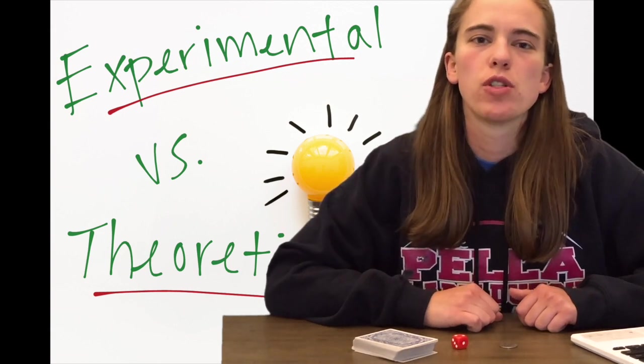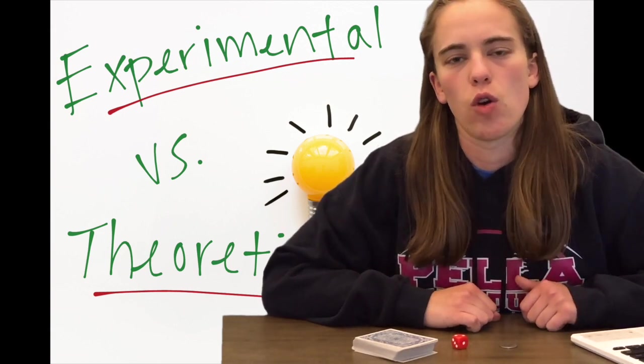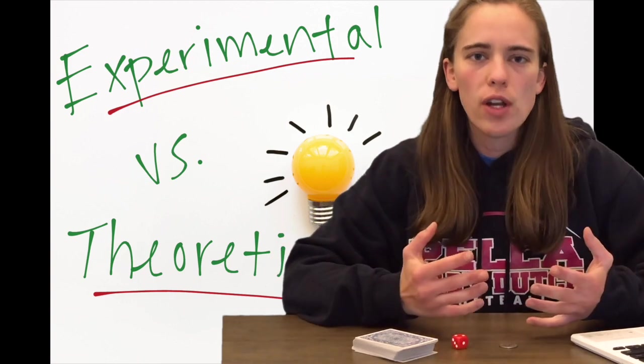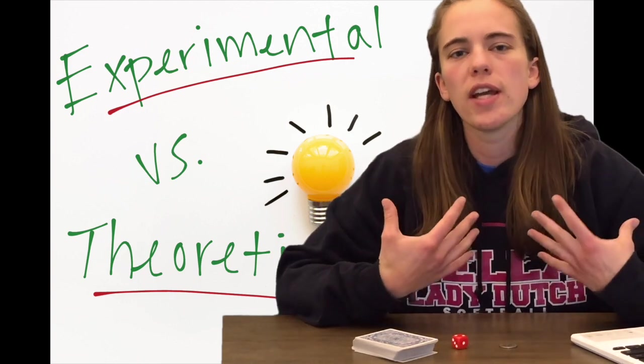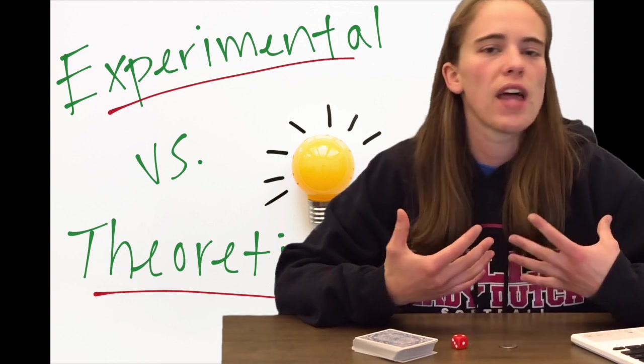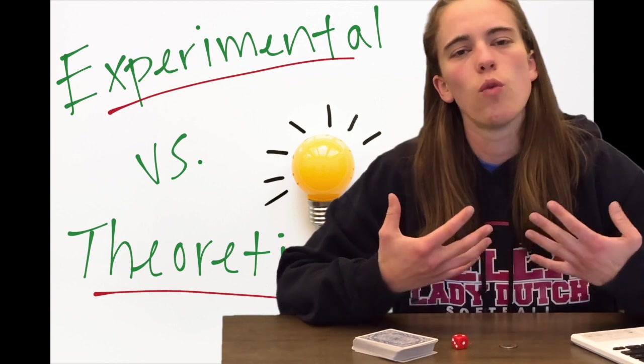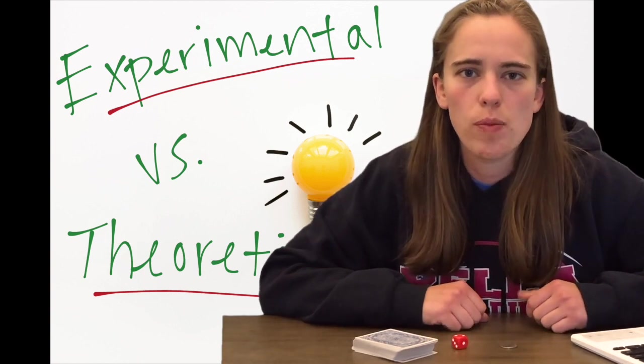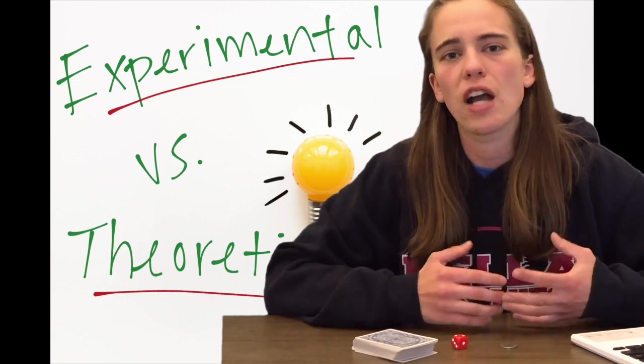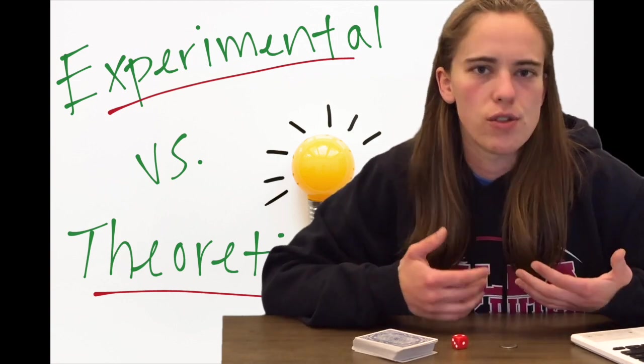Hey guys, today we're going to explore the difference between experimental and theoretical probability. Theoretical probability is what we would expect to happen without running any trials, just what the math says, versus experimental probability which is what happens when we actually run the trials and do the tests.